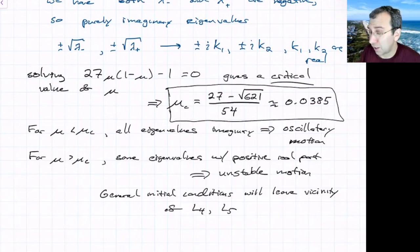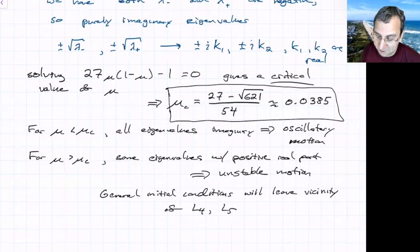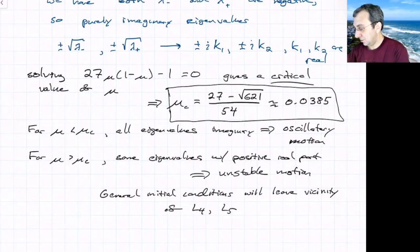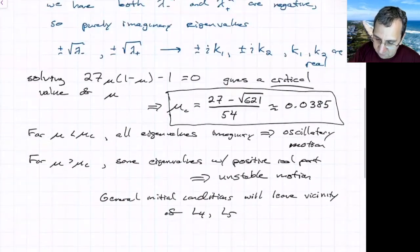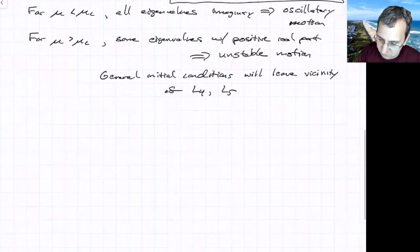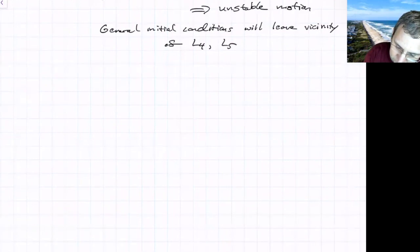This critical value of μ is actually pretty large by solar system standards. The Pluto-Charon system has μ ≈ 0.1, which is greater than μ_c, so L4 and L5 there would be unstable. The Earth-Moon system is below this critical value, so L4 and L5 for the Earth-Moon and Sun-Earth systems lead to just oscillatory motion.